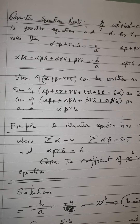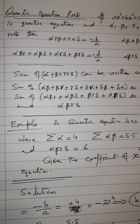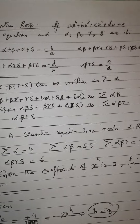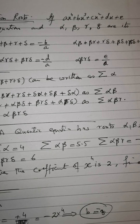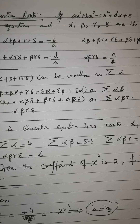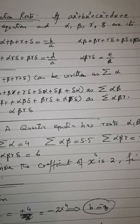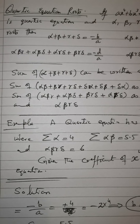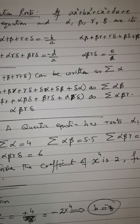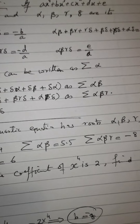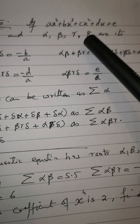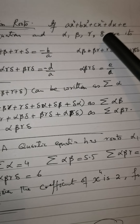In this video we will learn about the quartic equation roots. A quartic equation is a polynomial or equation in which the maximum degree of the variable is 4. So ax⁴ + bx³ + cx² + dx + e is a quartic equation, and in this equation we will have four roots, which we denote by alpha, beta, gamma, and delta.